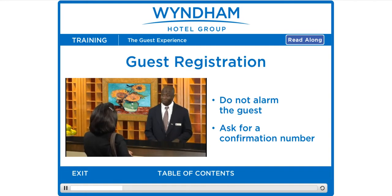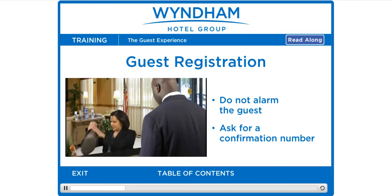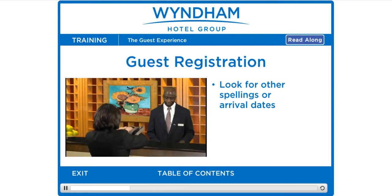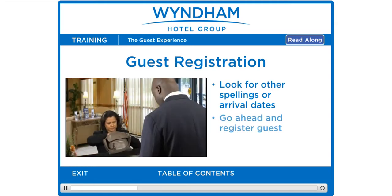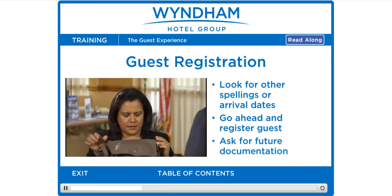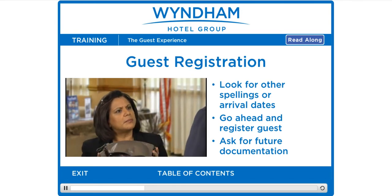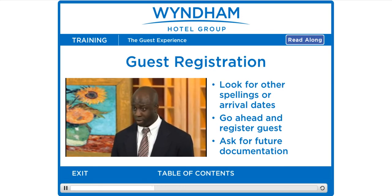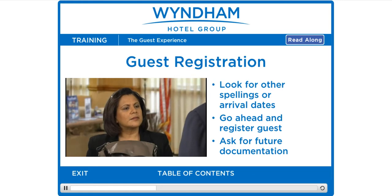Instead, ask for a confirmation number or other documentation. 'Do you have a confirmation number, Ms. Jimenez?' If the guest does not have one, look for the guest's name under different spellings or other arrival dates. If the reservation still cannot be found and you have rooms available, go ahead and register the guest, but ask that the guest return later with the documentation. 'Let's go ahead and get you registered, Ms. Jimenez. But when you get settled and connect your computer, please call down to the front desk with that confirmation number — it's important that we find your original reservation so you don't get charged as a no-show.'